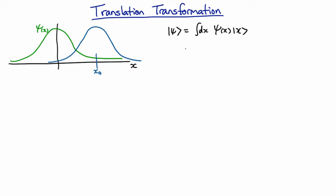So what we want is we want this to be moved over, and so we want the translation t of x0 acting on this thing.